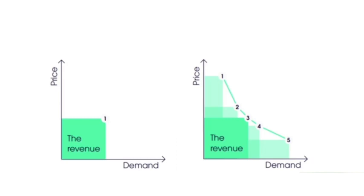On the left-hand side, you've got the static pricing model, which we have always learned about in economics. This is what we learned in economics books and lessons. We've got a single price point here, and with this single price point, based on the demand and the quantity demanded, we are going to have a certain amount of revenue, which is this green square.